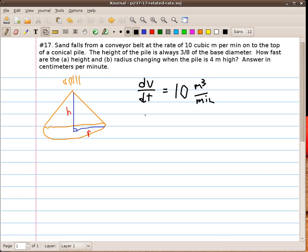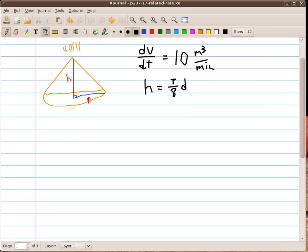We're also told that the height is related to the diameter. It's 3 eighths of the base diameter. So we can write that as h equals 3 eighths d. However I don't have a diameter in my problem so I'm going to rewrite that as 3 eighths times twice the radius, which is 3 fourths of the radius.